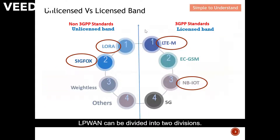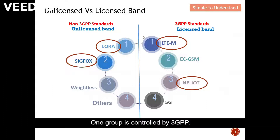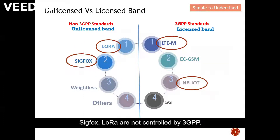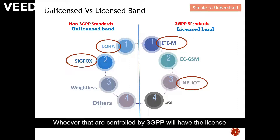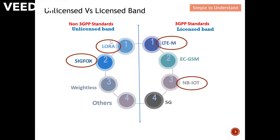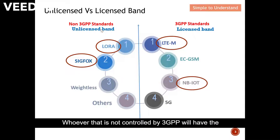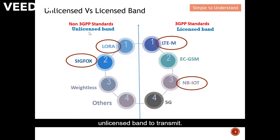LPWAN can be divided into two divisions. One group is controlled by 3GPP, and the other group is not controlled by 3GPP. Sigfox and LoRa are not controlled by 3GPP; LTE-M and NB-IoT are controlled by 3GPP. Those controlled by 3GPP will have a licensed band to transmit, while those not controlled by 3GPP will have an unlicensed band to transmit.